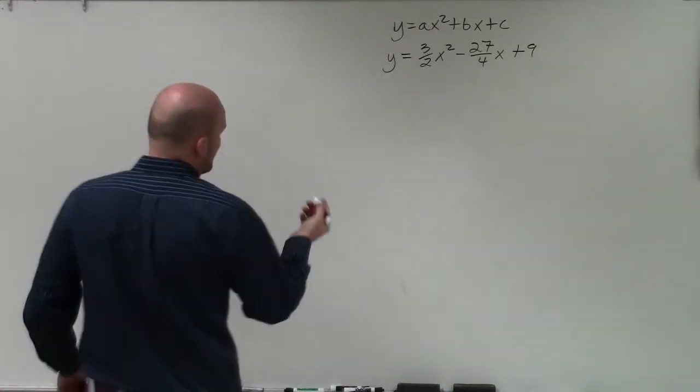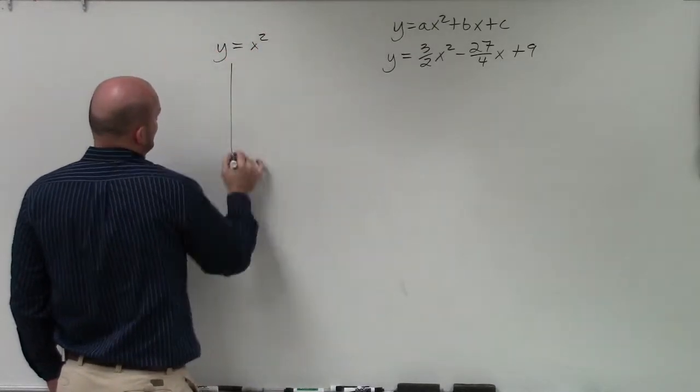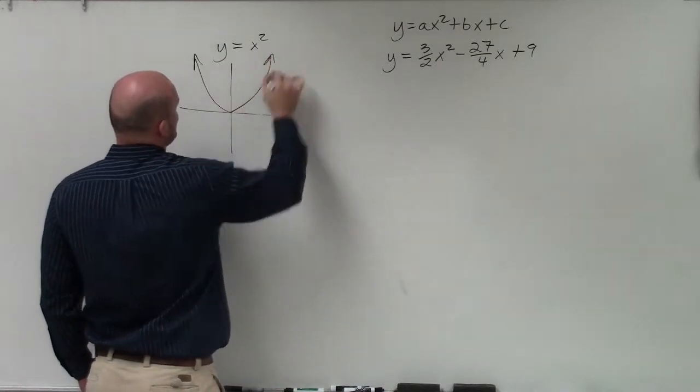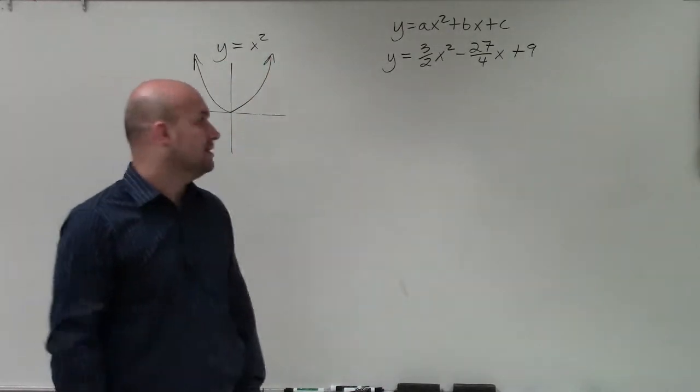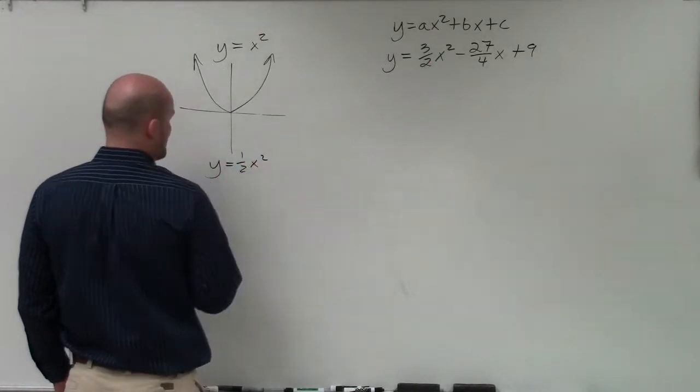So I want to go over a very important point. If we just look at the parent graph y equals x squared, this graph crosses at the origin. And that means it has one real solution, which is 0. Now, if I kind of change this, and let's say I do y equals 1 half x squared, well, that's going to make the graph much wider.